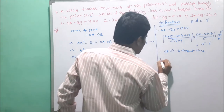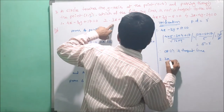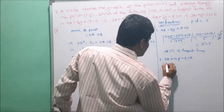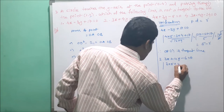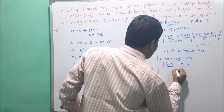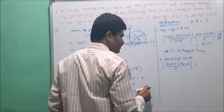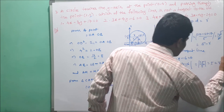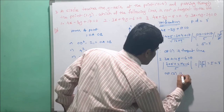Second option: 3x + 4y - 6 = 0. Perpendicular distance from (5, 4): |3×5 + 4×4 - 6| / 5 = |15 + 16 - 6| / 5 = 25/5 = 5, which equals radius. So option 2 is also a tangent line.